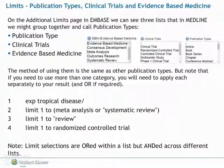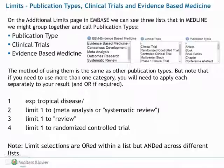On the Additional Limits page in Embase, we can see three lists that in MEDLINE we might group together and call publication types. The methods of using these are the same, but note that if you need to use more than one category, you will need to apply each separately to your result and then OR them together if required.